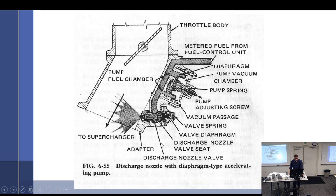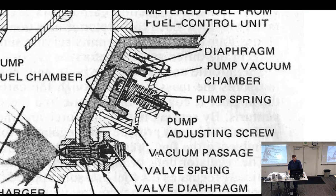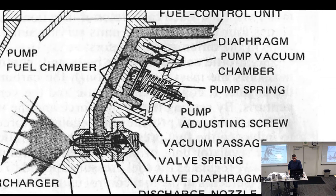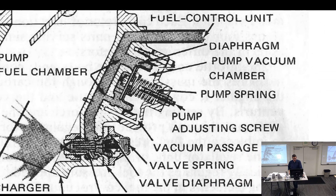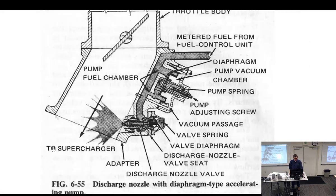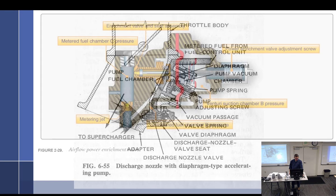This is the accelerator pump — just slightly different, but the exact same idea. Diaphragm on one side, vacuum on the other, fuel pressure on the third. At idle, the vacuum cocks this back, pulls the syringe, and it waits. As soon as we go full throttle, we lose that vacuum — the spring pressure pushes the plunger forward, injects extra fuel, we get a momentary richness, and then it goes back.